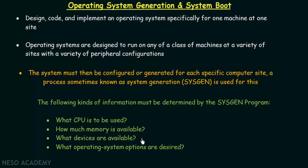The third thing is what devices are available. The sysgen program has to determine what devices are attached to this specific machine, their models, and how they are connected, so the operating system can function properly with those devices. The fourth thing is what operating system options are desired — that means what functions this machine wants the operating system to perform. Depending on that, the sysgen program generates the operating system for that particular set of tasks. That is how the operating system generation works.